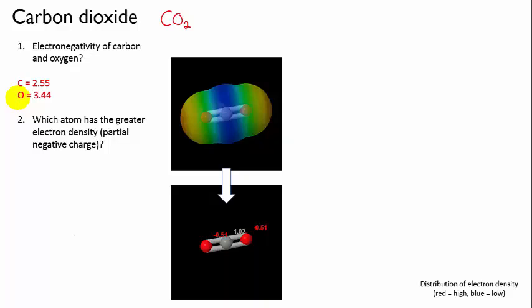Our next step is to draw the bond dipoles. So we draw the Lewis structure, we put in the bond dipoles which will go from the carbon out towards the oxygen.